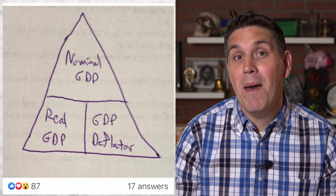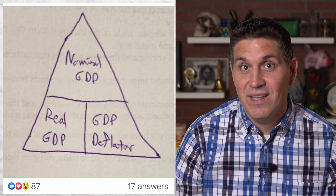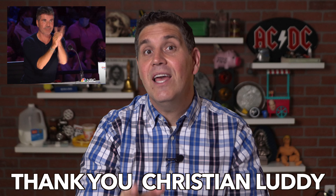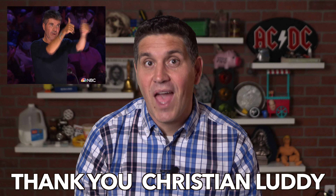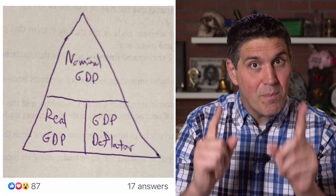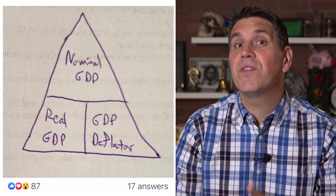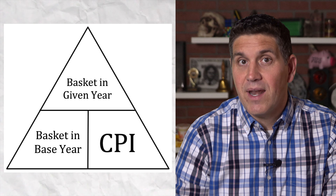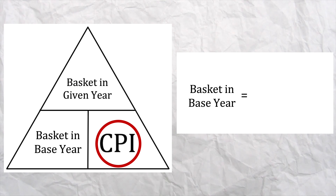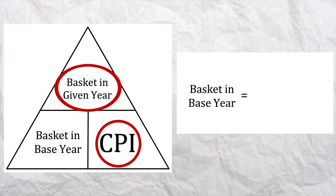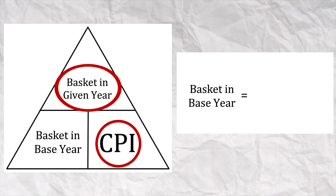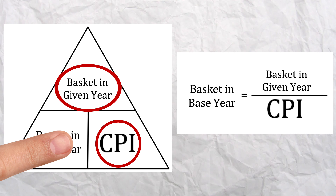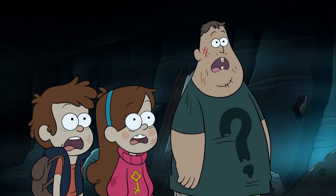you multiply the real by the deflator. This is an awesome way to remember the equation. My hat's off to that student, Christian Letty, for coming up with the idea. Hopefully that helps you, and also remember that it works with the CPI equation. All you have to do is set it up like this. If they give you the CPI and the value of the market basket in some given year, you can use this to calculate the market basket in the base year.